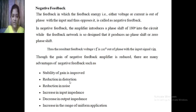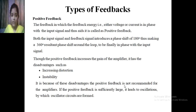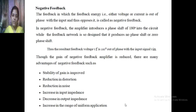Negative feedback has the following advantages: stability of gain is improved, reduction in distortion, reduction in noise, increase in input impedance, decrease in output impedance, and increase in the range of uniform application. We do not use positive feedback because the feedback signal is in a phase shift of 180 degrees, resulting in 360 degrees at threshold. When gain increases, distortion increases. If positive feedback has sufficiently large gain, it leads to oscillation - so positive feedback is used in oscillating circuits.